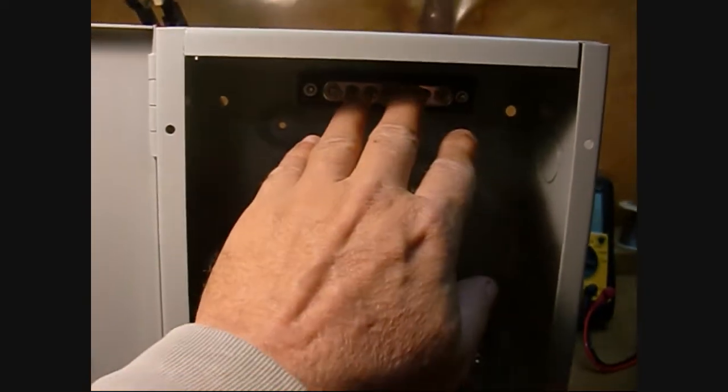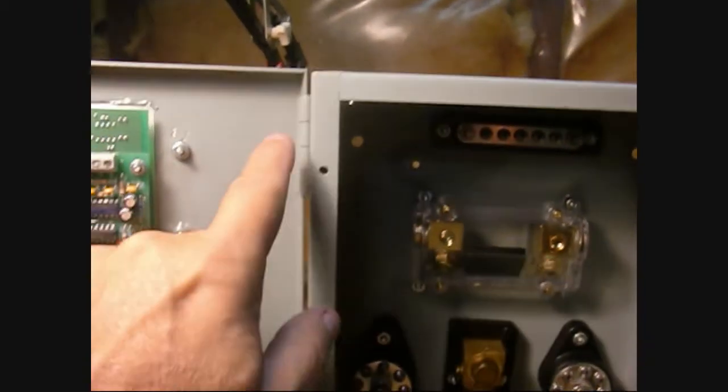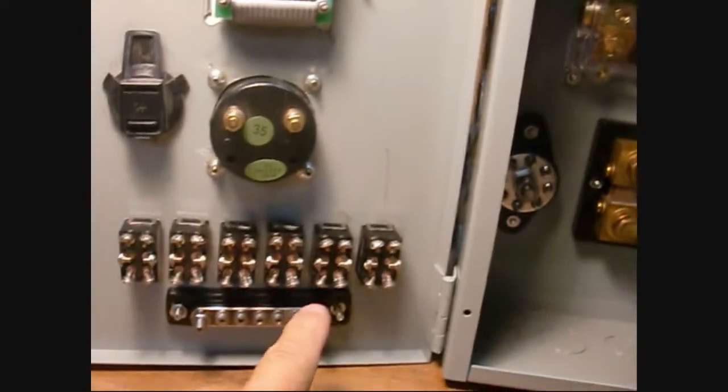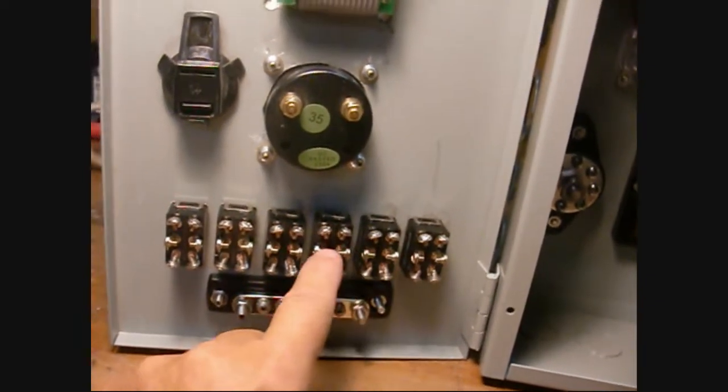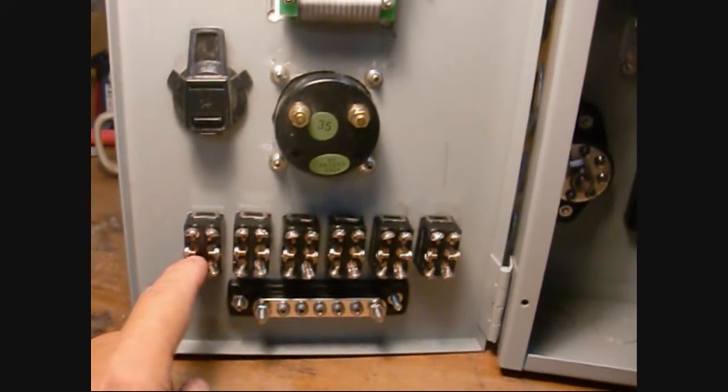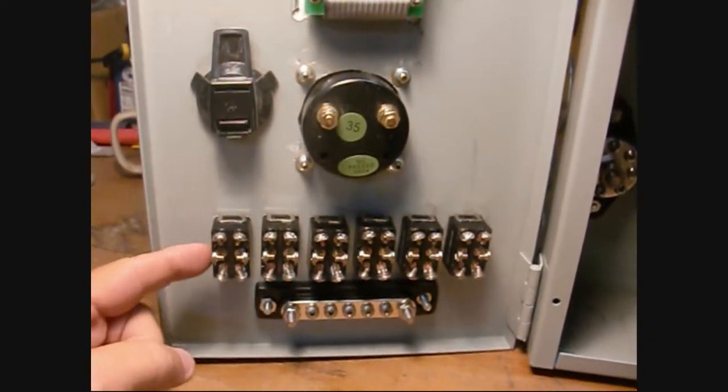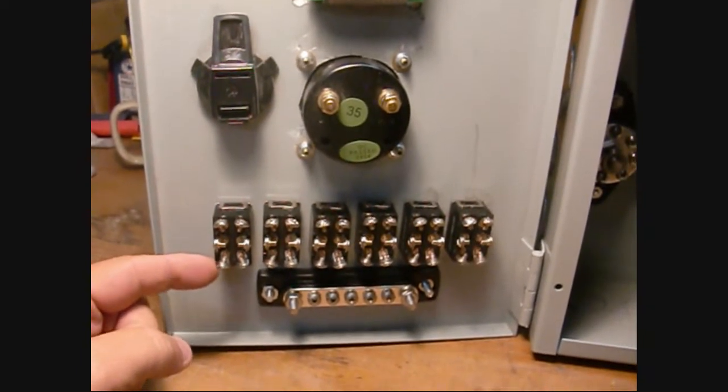The grounds will go to this ground bus bar on the solar side. Positive leads will come over and individually feed these six switches. If I flip the switch up, it'll connect the middle to the bottom.